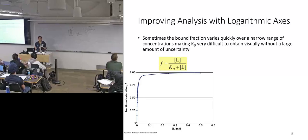Sometimes you're going to get something that looks like this, and it's going to be really hard for you to get a Kd off of that. It's difficult to obtain visually without probably a really large amount of uncertainty.